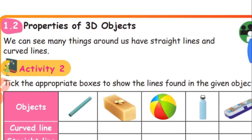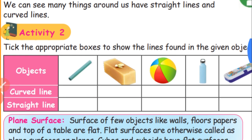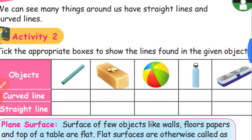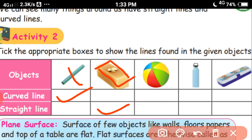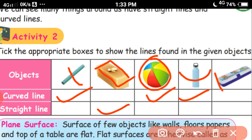We can see many things around us have straight lines and curved lines. You can see Activity 2: tick the appropriate boxes to show the lines found in the given objects. You have to find out whether they have a curved line or a straight line. The first object has a curved line. This one has a straight line. This board has a curved line. And the pencil box has a straight line.